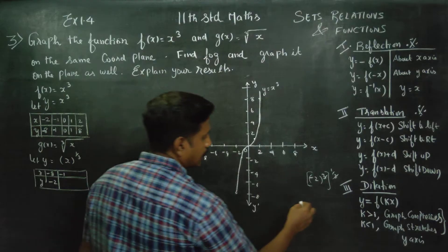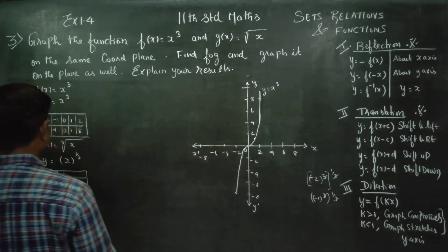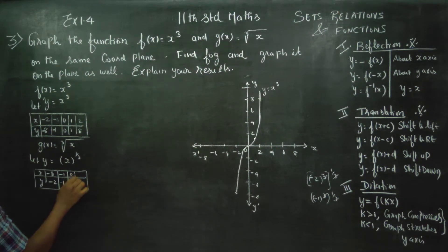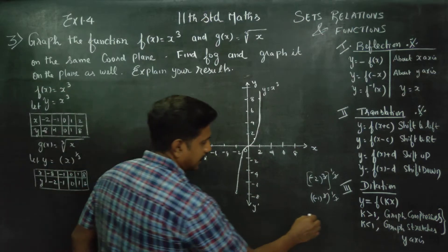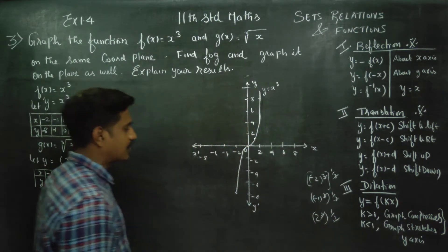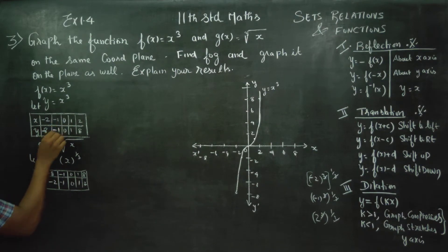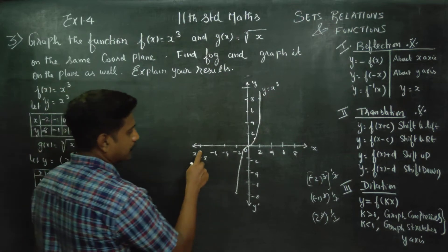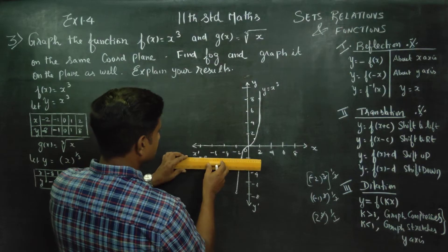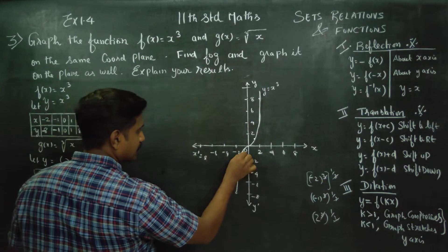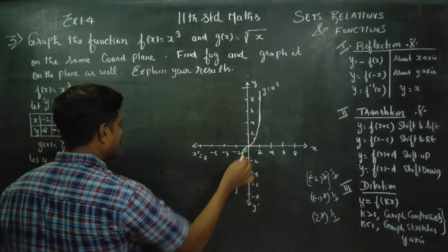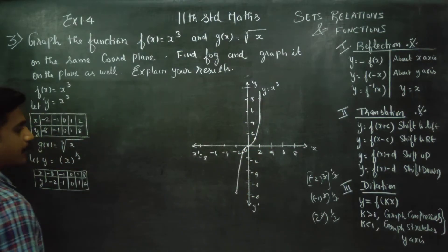Cube root of minus 8 is minus 2. Cube root of 8: 8 can be written as 2 cubed, so 2 cubed to the power 1 by 3 — the powers cancel and you get 2. So the table values are: x equals minus 8 gives y equals minus 2, x equals minus 1 gives y equals minus 1, x equals 0 gives 0, x equals 1 gives 1, and x equals 8 gives y equals 2.